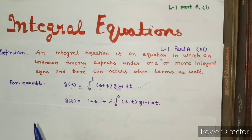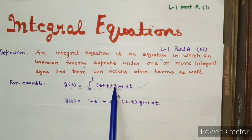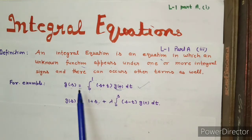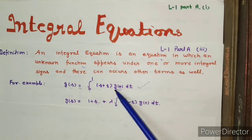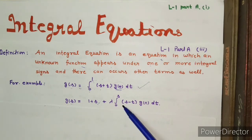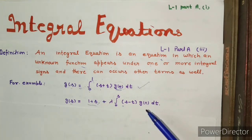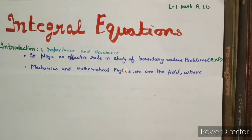The definition is: an integral equation is an equation in which the unknown function exists under the integral sign. For example, one equation has limits of integration that are constant, and another example has limits of integration that are variable, and here there is another term. This will be useful in the classification.